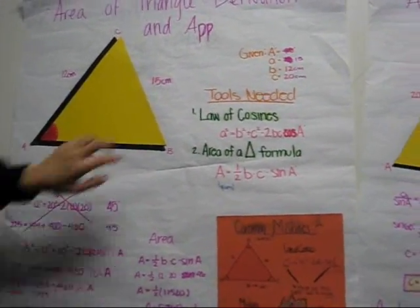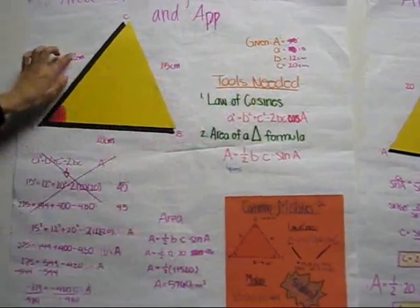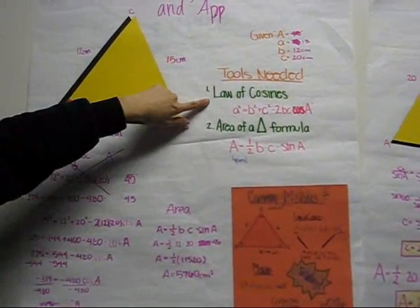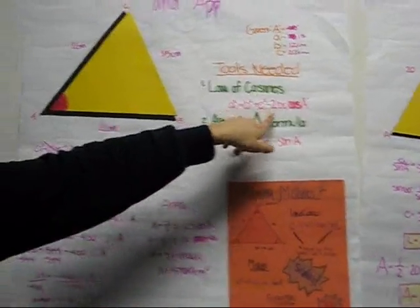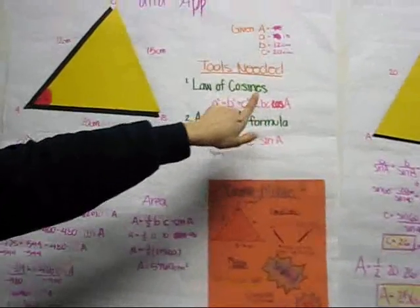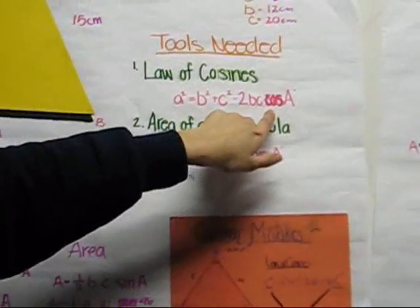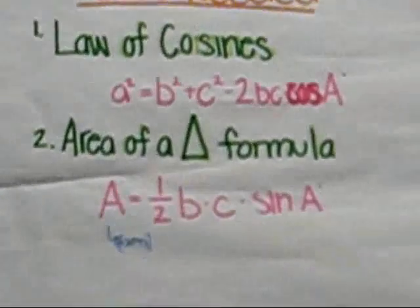And it's usually when you have, when you're given three different sides, like here. And first you're going to use the law of cosines, which is a squared equals b squared plus c squared minus 2bc times the cosine of angle a.